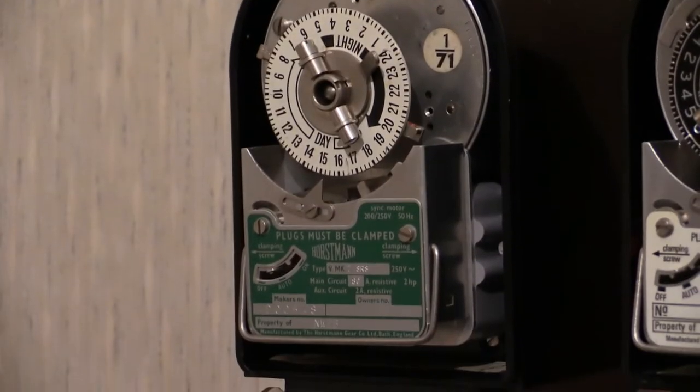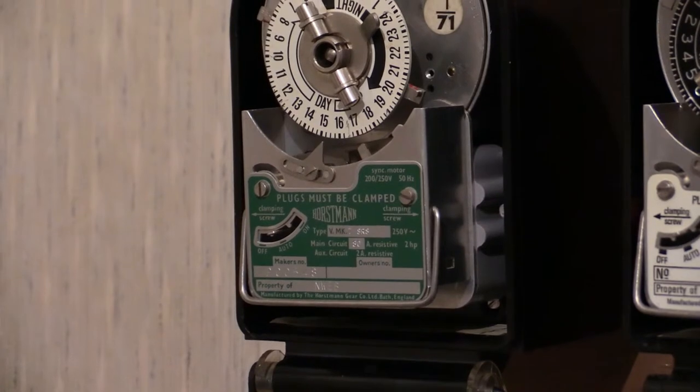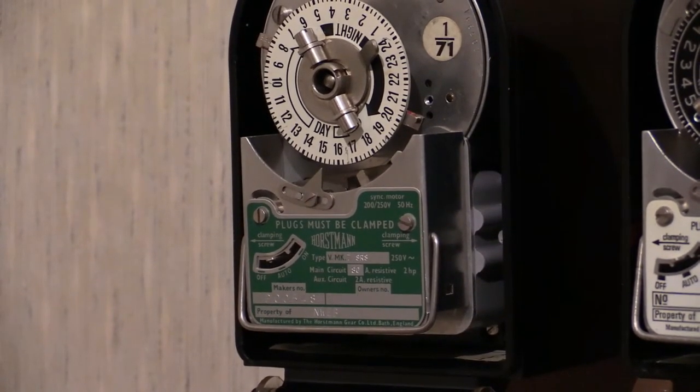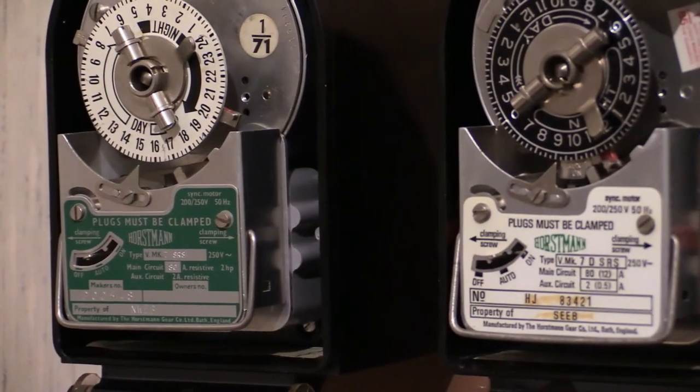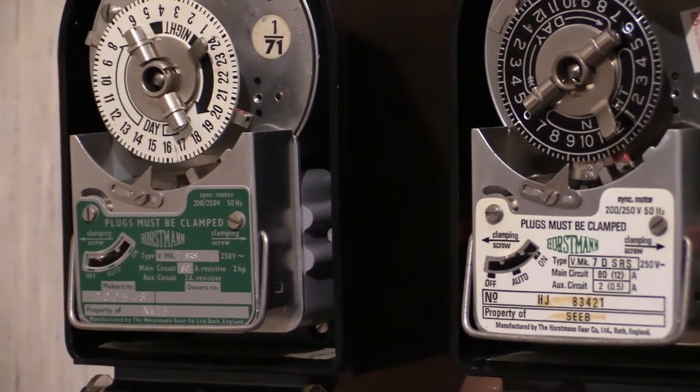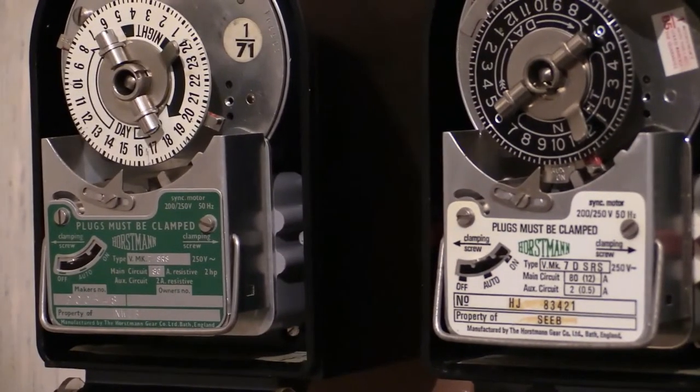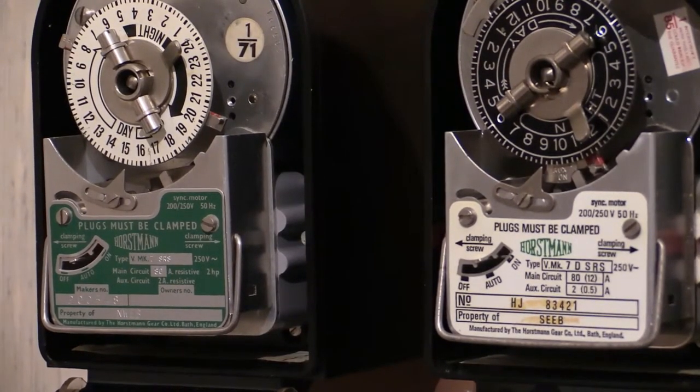As you can see, that one does not have the bridge or the added on micro switch. Even though this one has got a green specification plate with silver writing, that doesn't indicate whether or not it's a 7D SRS. The coloring of specification plates has nothing to do with denoting a special type of time switch, because I have seen VMK 7SRS time switches that have the white specification plates with black writing on it.